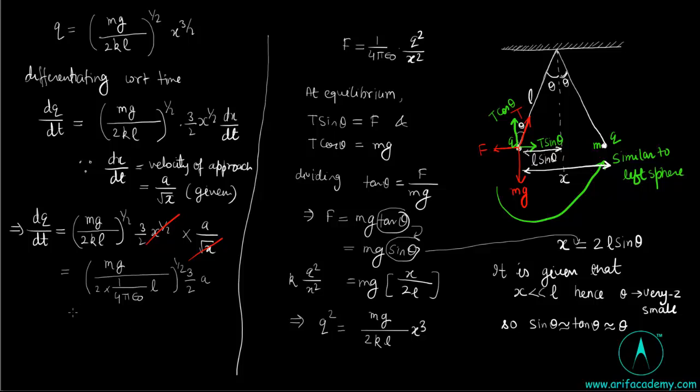This will be 2 pi epsilon naught Mg upon L raised to power half, 3 A by 2. And this is equal to the answer. This will be the answer.